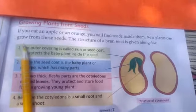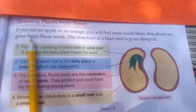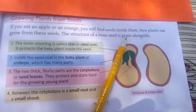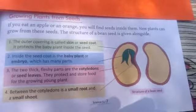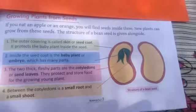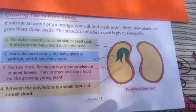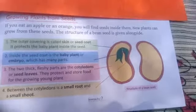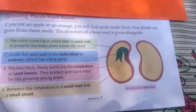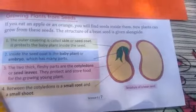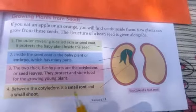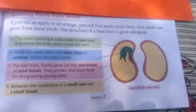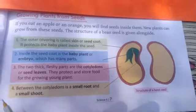Students, if you eat an apple or an orange you will find seeds inside them — you get the seed inside the fruit. New plants can grow from these seeds, as we studied in the last class. Seeds are also able to produce a new plant, so seeds are helpful in the reproduction in plants.